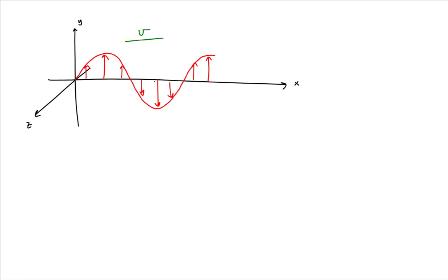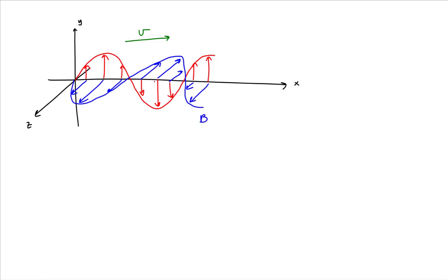And this oscillation is traveling to the right. This changing electric field creates a changing magnetic field that oscillates with the same frequency and has the same wavelength, except it is perpendicular to the direction of the electric field. So the magnetic field oscillations are parallel to the z-axis, at right angles to the electric field oscillations. With this, we have a traveling electromagnetic wave that is traveling to the right.